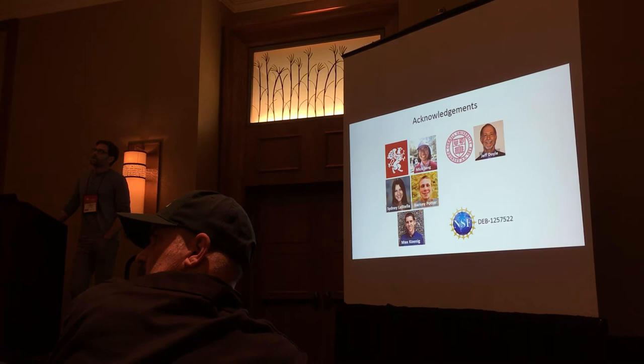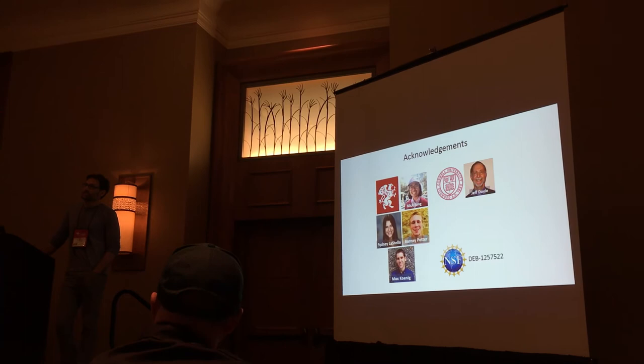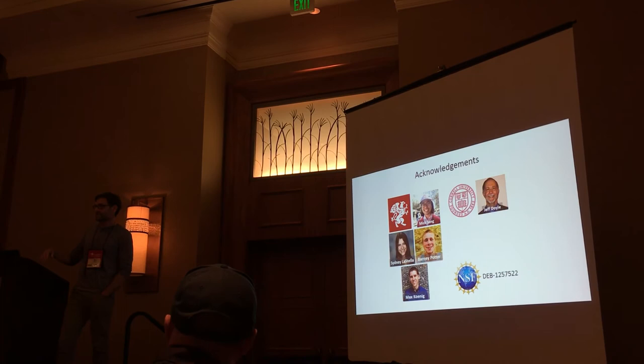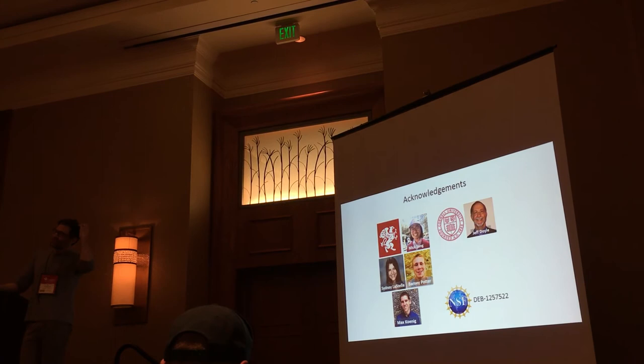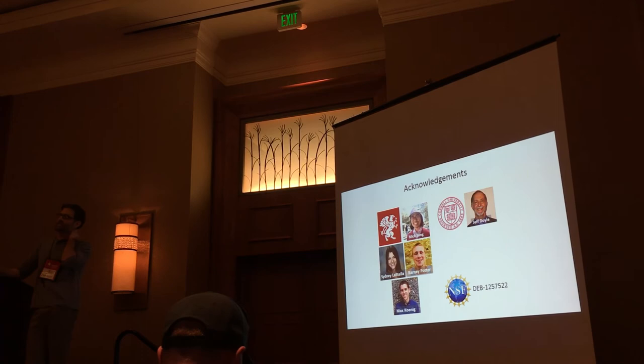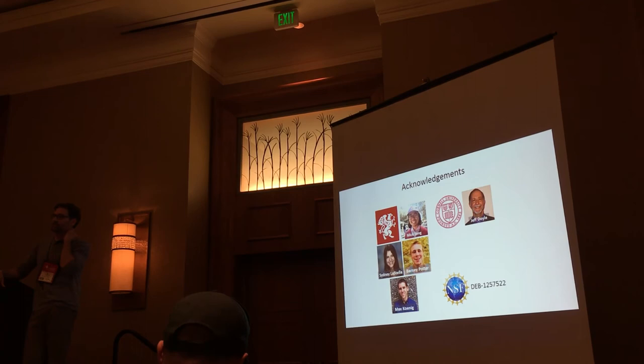We do recover a lot of transposable elements in our RNA-seq reads. We've never done a careful analysis of them, but we do see a number of TEs. We did look at TE abundance, though perhaps not as rigorously as we should, and we did not see any obvious differences in TE abundance in the polyploid — they basically look similar to their diploid progenitors. This is in Glycine.